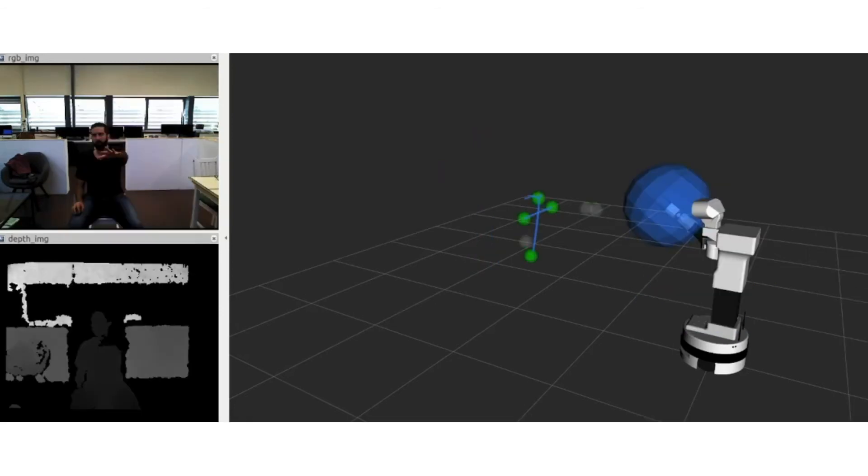Some other losses happened when there were occlusions. In this case, the human occluded part of his own arm.